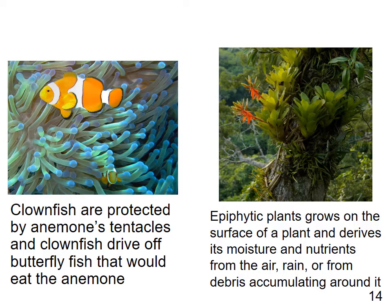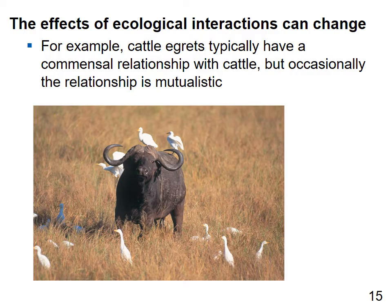An epiphytic plant grows on the surface of another plant and derives moisture and nutrients from air, rain, or debris — not from the host plant, so it's not parasitic. However, ecological interactions don't always fit neatly in boxes. For example, a cattle egret typically has a commensal relationship with cattle — eating insects the cattle kick up — but occasionally helps remove insects that are predators on the cattle, making it mutualistic.